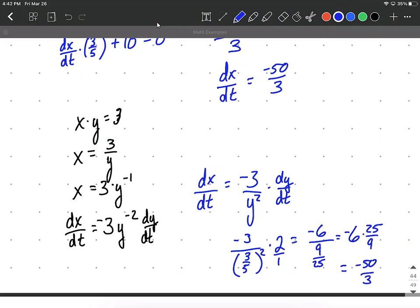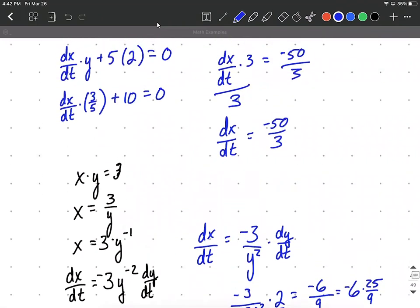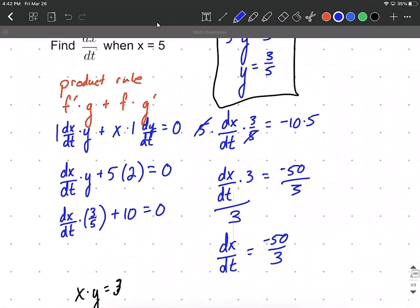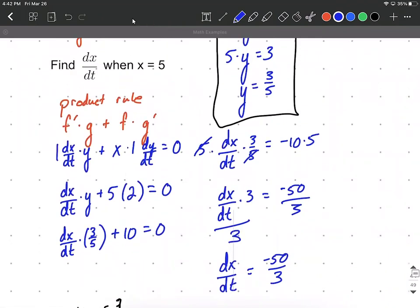So a couple different ways to go about and get the same answer. It's just whether you want to get x on one side all by itself first, or if you want to jump straight into implicit differentiation, we can get to the same exact answer two different ways. Hope this helps.